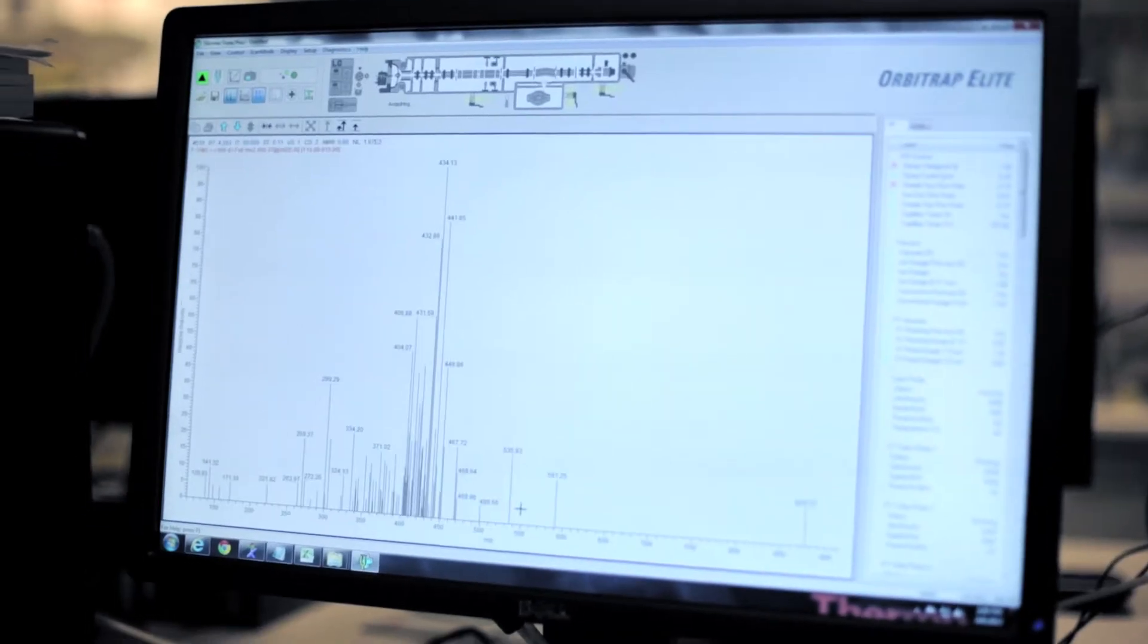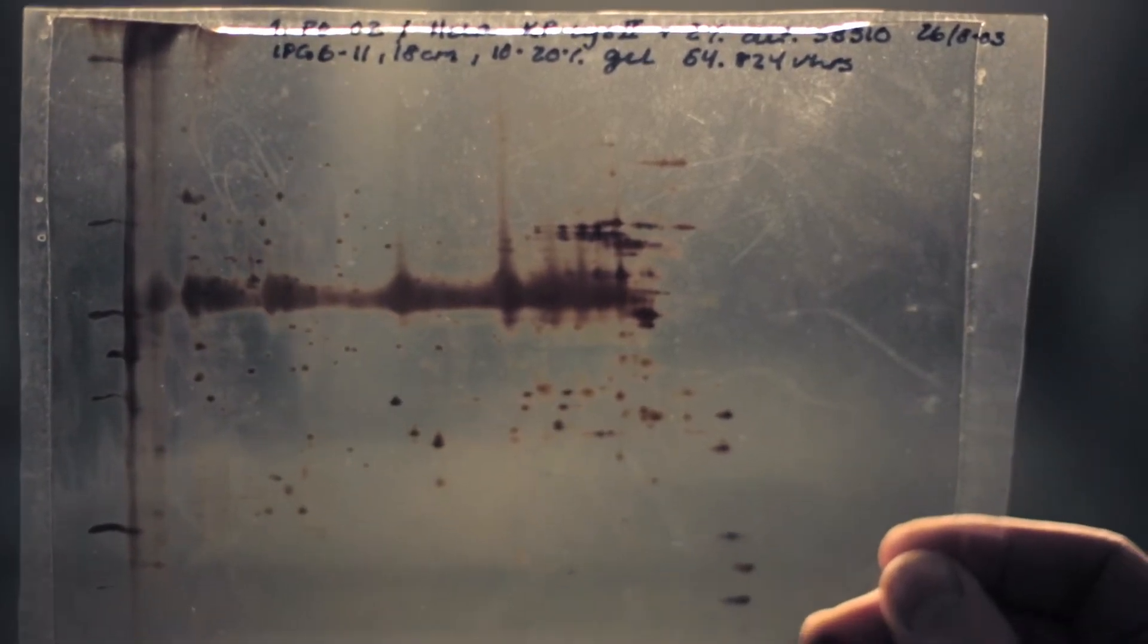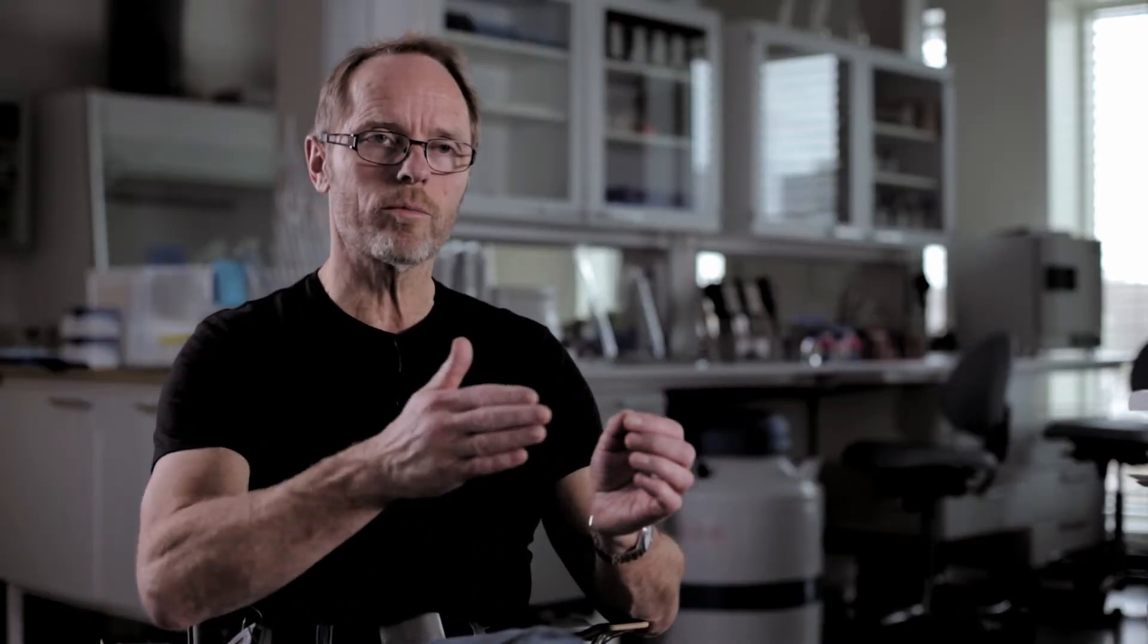Proteomics is largely driven by mass spectrometry, a technology for measuring masses of molecules. We can identify a given protein. Proteins are chains of amino acids made of 20 different building blocks in a specific sequence.